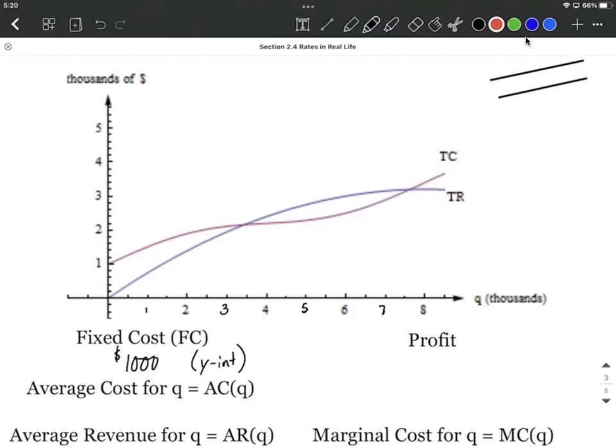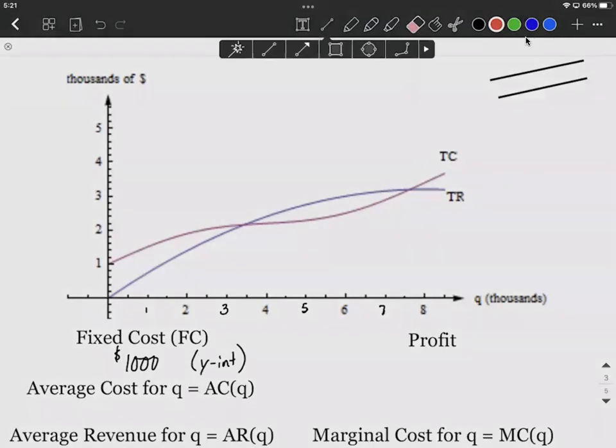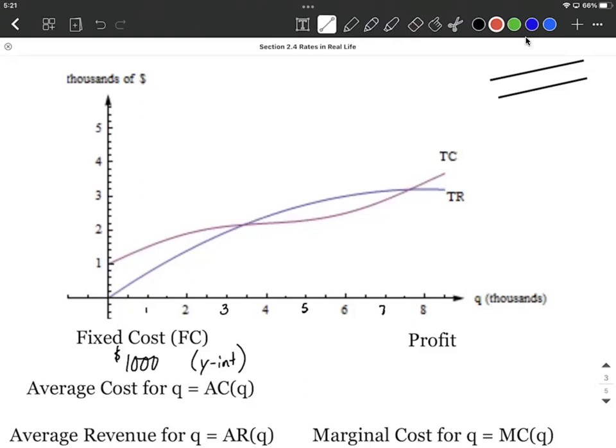Alright, now the average cost, again we're going to be referring to our cost function. The average cost would be the total cost divided by the number of units sold. So if we're thinking about this graphically, if I start at zero, zero, and I draw a line to any point on here, the slope of this line, going from zero, zero to any specific point that we're looking at here, the slope of that line would be our average cost for selling that many units.